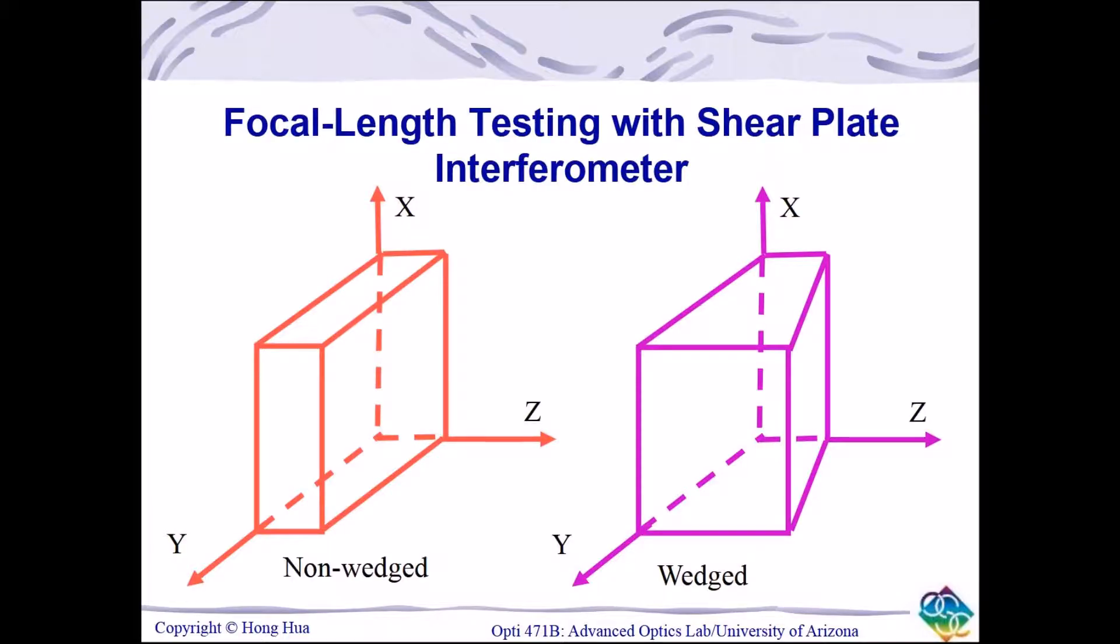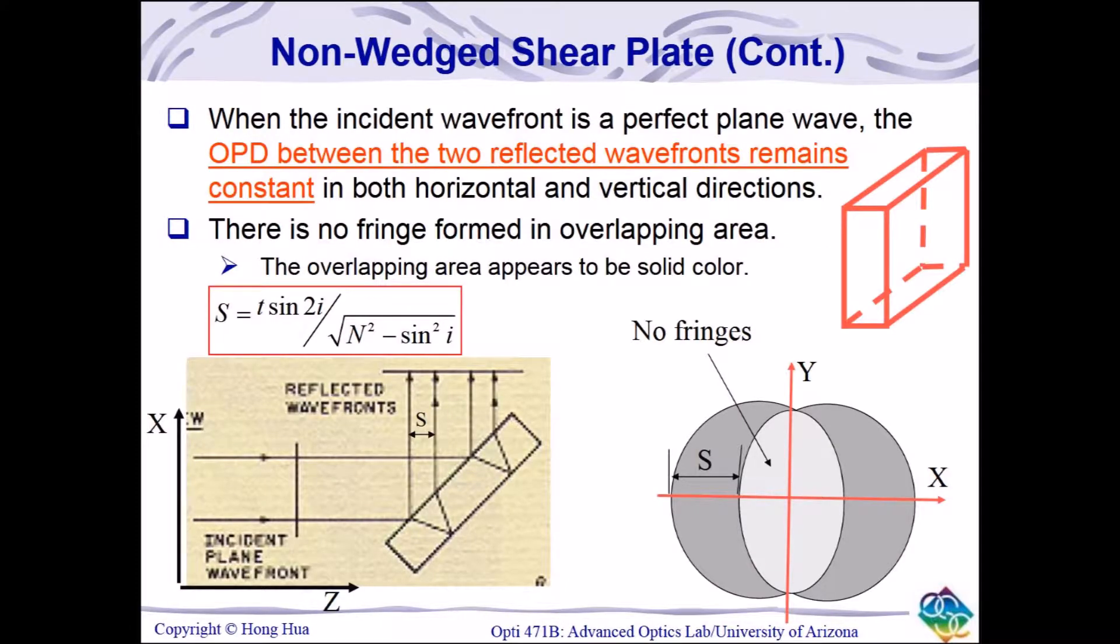Shear plates come in two flavors, wedged and non-wedged. In previous labs, we have used wedged shear plates to collimate light. When passing a plane wave through a non-wedged shear plate, no fringes are formed, as the OPD between the two reflected wavefronts is constant in both the horizontal and vertical directions.